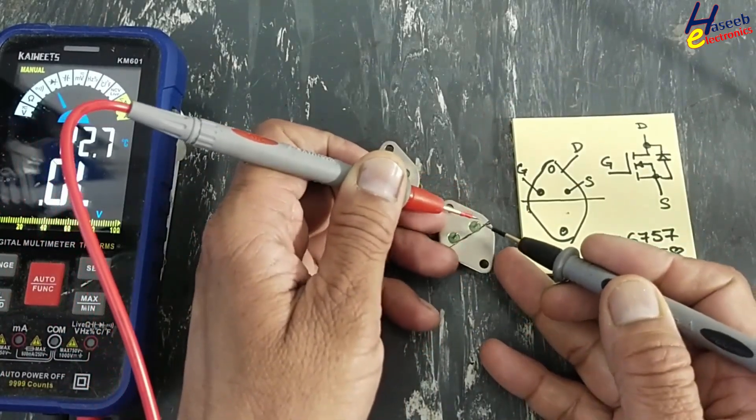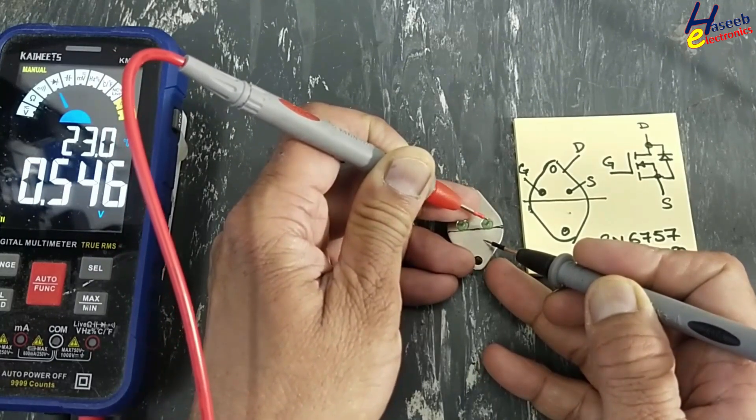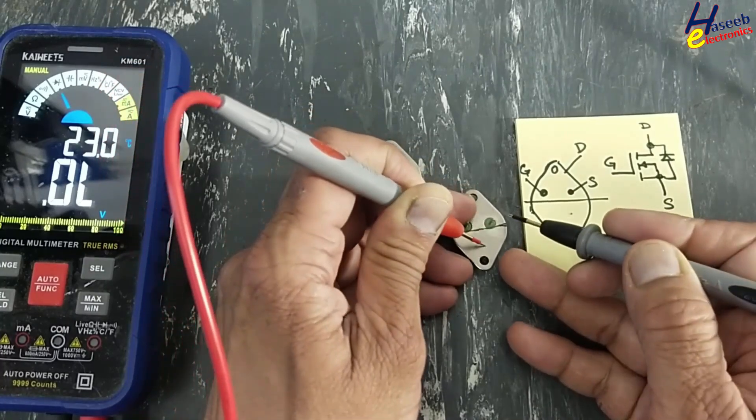This is source and this is drain. The reading shows 0.545 - that's the diode forward voltage. Now reverse the leads.